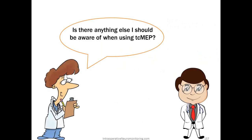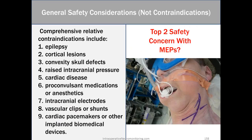Is there anything else I should be aware of when using transcranial motor evoked potentials? General safety considerations, not contraindications, but kind of general contraindications. Comprehensive relative contraindications include the following: epilepsy, cortical lesions, convexity, skull defects, raised intracranial pressure, cardiac disease, proconvulsant medications or anesthetics, intracranial electrodes, vascular clips or shunts, cardiac pacemakers, or other implanted biomedical devices like cochlear implants, stuff like that. These are things that you should be asking on your intake form when you get a consent from your patient. These are also things that they will ask you on the exam. You can see the patient there with the bite block. It looks like they actually have two of them in there which is probably better. The two most likely causes of problems with MEPs is not burns, it's bite laceration issues and movement during surgery.